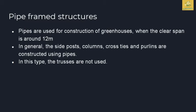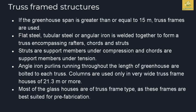Pipe frame structures can provide a clear span area of around 12 meters. Side post columns, cross ties, and purlins are constructed using pipes, and trusses are not used. For greenhouse spans greater than or equal to 15 meters, truss frame structures are used. Flat steel, tubular steel, and angular iron form the truss. Straps are compression members and cords are tension members. Most greenhouses are of truss frame type as these frames are best suited for prefabrication.